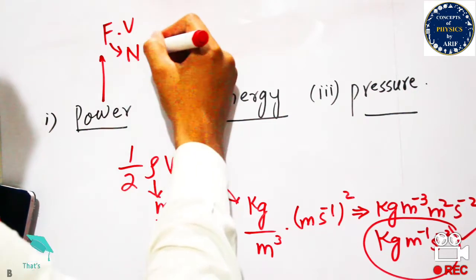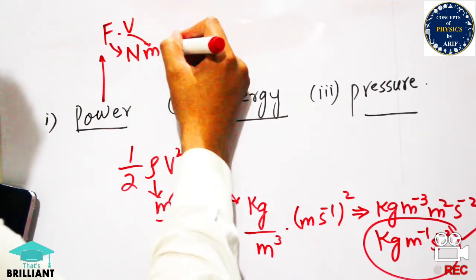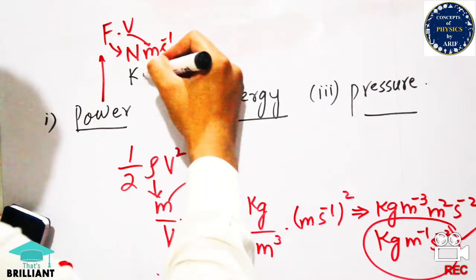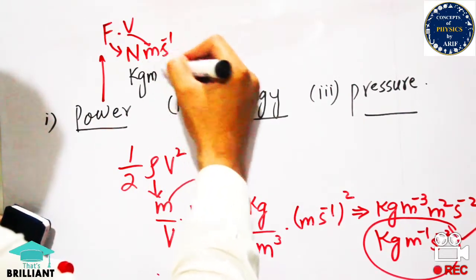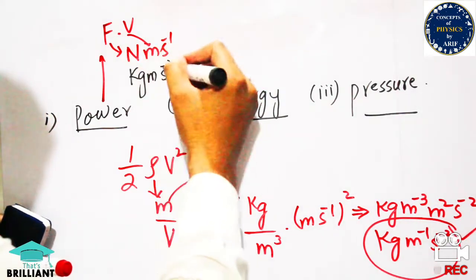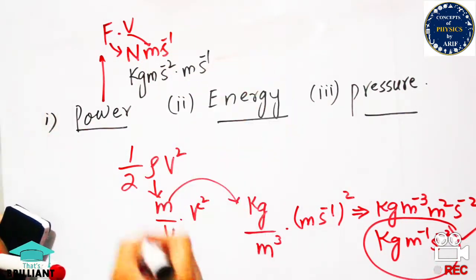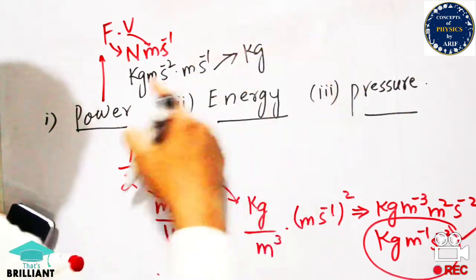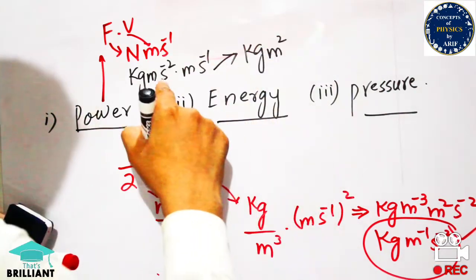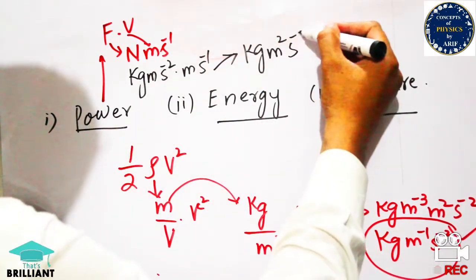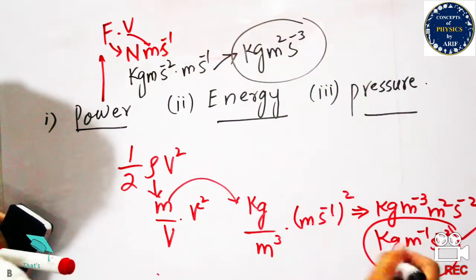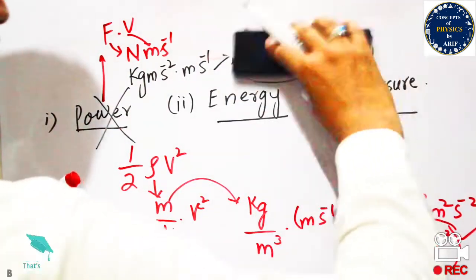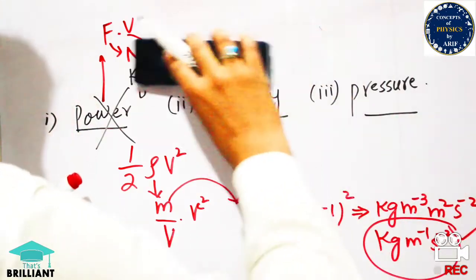The unit of power is calculated from P = F·v. The unit of force is Newton, and velocity has units of meters per second. Opening Newton gives kilogram·meter per second squared, multiplied by meter per second. Joining these gives kg·m²·s⁻³, which is not equal to kg·m⁻¹·s⁻², so power does not match this expression.